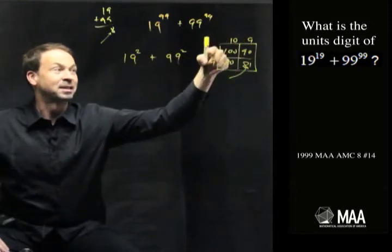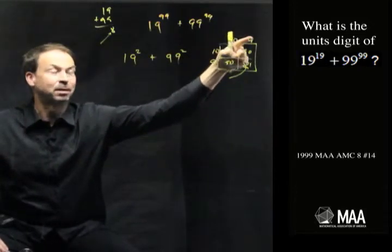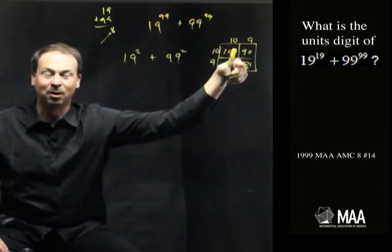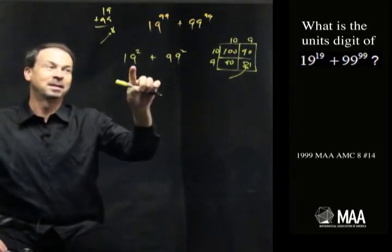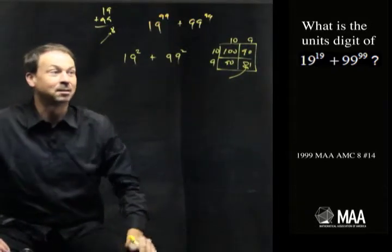In fact, without doing any further work, I'll do the same thing with 99 here. I think it was 90 plus 9. I can see the same idea is going to work. This also ends in a 1. Ah, which means this number, 19 squared plus 99 squared, ends with a 2. I think I've got a strategy now.